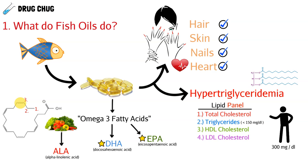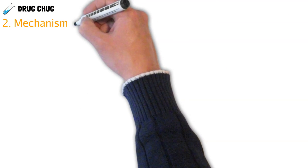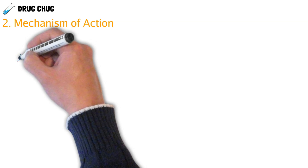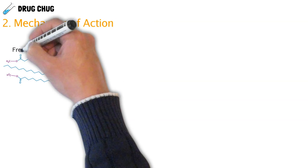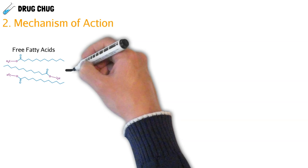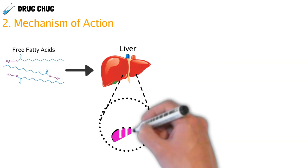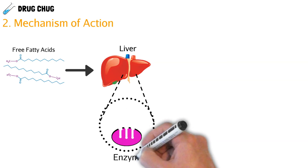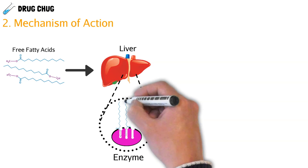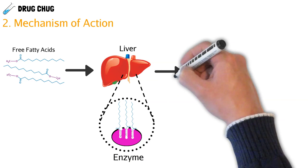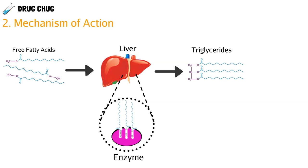To understand how fish oils work in our body, we first need to understand how triglycerides are made. Here we have some free fatty acids that make their way to our liver. In our liver, there's an enzyme that takes each of those free fatty acids and binds them together to form a triglyceride.